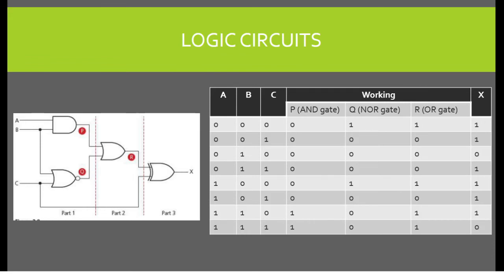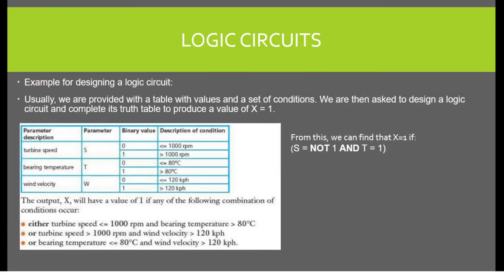Example for designing a logic circuit. Usually, we are provided with a table with values and a set of conditions. We are then asked to design a logic circuit and complete its truth table to produce a value of X equals 1. From this diagram, we can find that X equals 1 if S equals NOT 1 and T equals 1, or S equals 1 and W equals 1, or T equals NOT 1 and W equals 1.